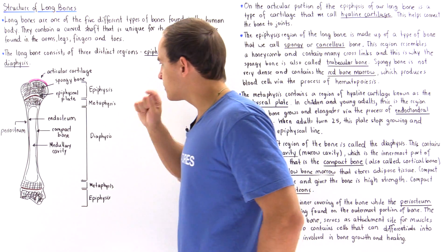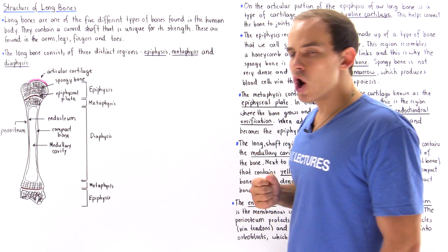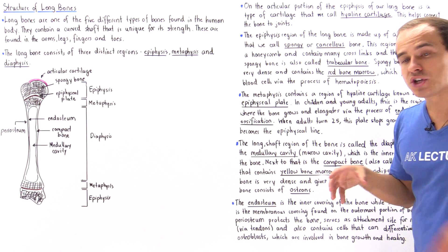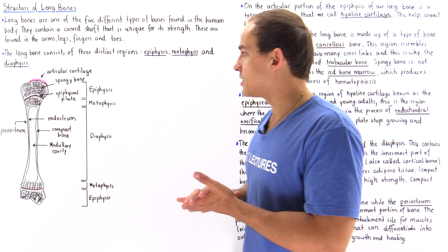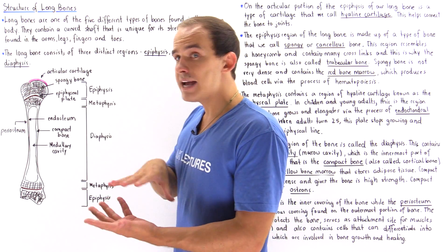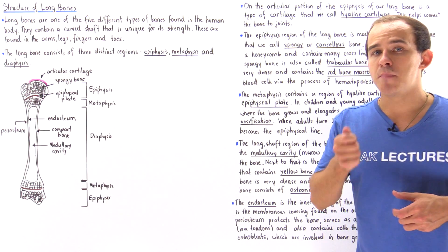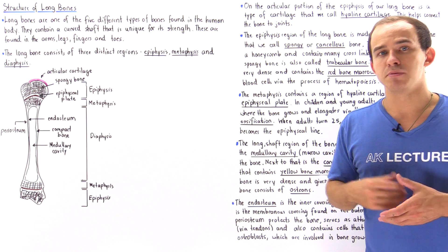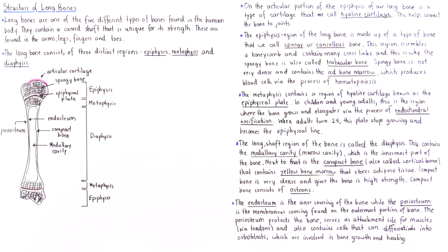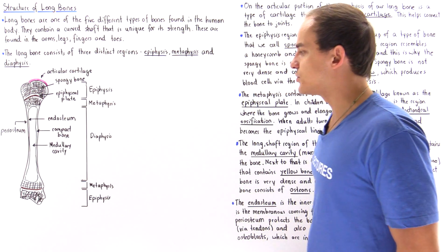The epiphysis contains a special type of bone structure known as spongy bone, also known as cancellous bone or trabecular bone. It's called trabecular because the structure resembles a honeycomb or a sponge. Inside the spongy bone, which is relatively light and flexible, we have a specialized region known as the red bone marrow, where we produce red blood cells and white blood cells. This process of producing blood cells is known as hematopoiesis, which takes place in the red bone marrow of the spongy bone inside the epiphysis.